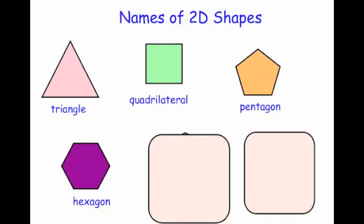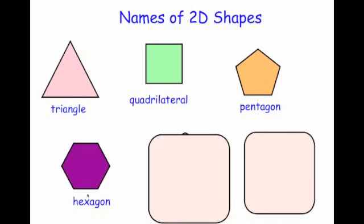Next, this shape with six straight sides is called a hexagon. Notice the word six has got the letter X, and so does hex. So hexagon is six straight sides.